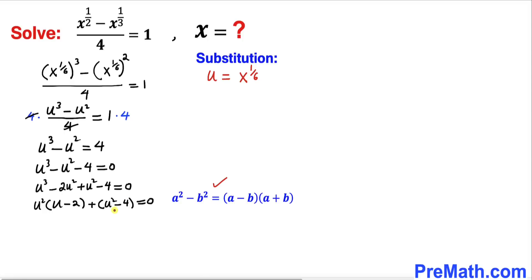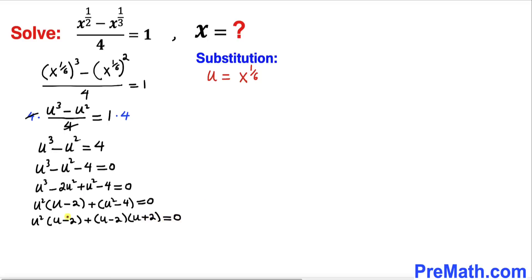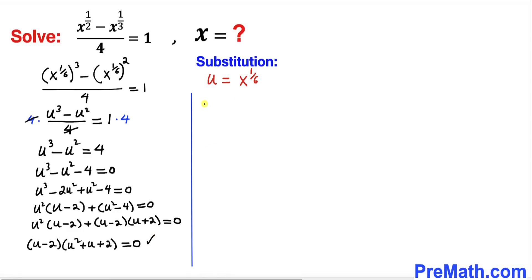Applying the difference of squares identity, u^2 minus 4 becomes (u minus 2)(u plus 2). So we have u^2(u minus 2) plus (u minus 2)(u plus 2) equals 0. Factoring out the common factor (u minus 2) gives (u minus 2)(u^2 plus u + 2) equals 0.